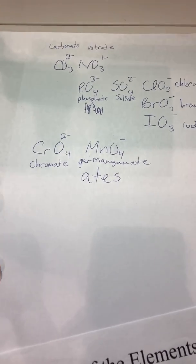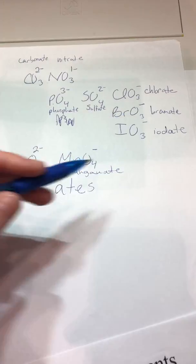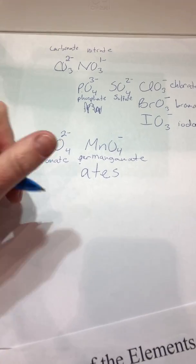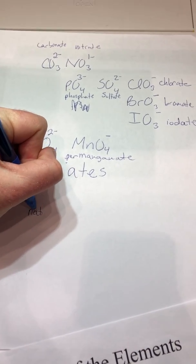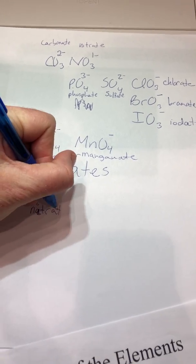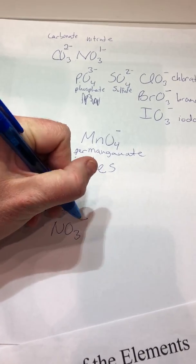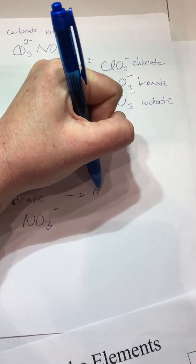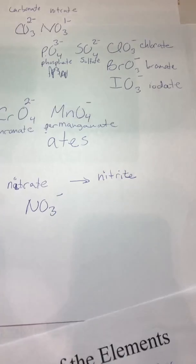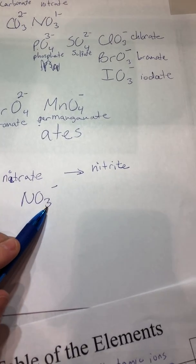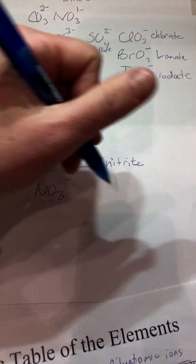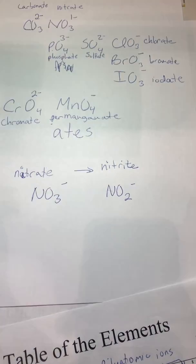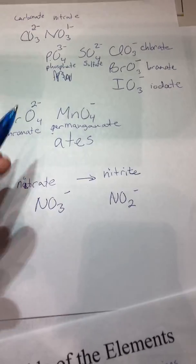All right. Now let's go ahead and do a couple of variations from these things. If I want to change it from -ate to -ite. So for example, nitrate is NO3 with a negative charge. If I want to change it from nitrate to nitrite, I simply reduce the number of oxygen by one. Everything else stays the same. So instead of NO3 with a negative one charge, it becomes NO2 with a negative one charge.